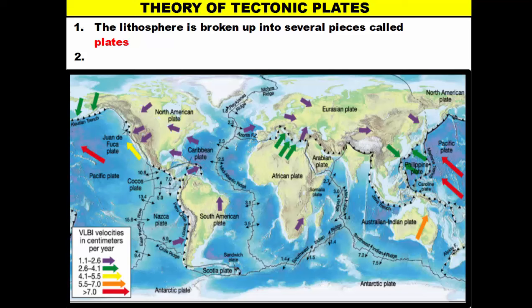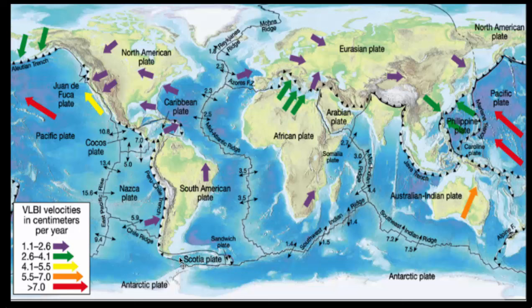According to the theory of tectonic plates, the lithosphere is broken up into several pieces called plates. When we talk about tectonic plates, we're talking about chunks of lithosphere. The Earth's outer shell — the lithosphere — is not one solid shell. If you take a look at the map at the bottom here, you'll notice that the Earth's lithosphere is actually broken up into sections, and these sections are called plates.